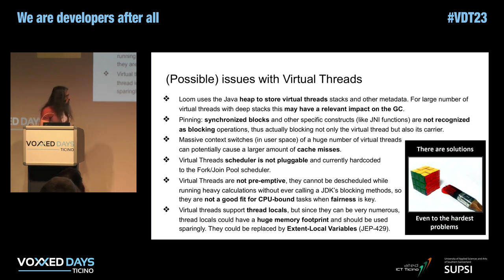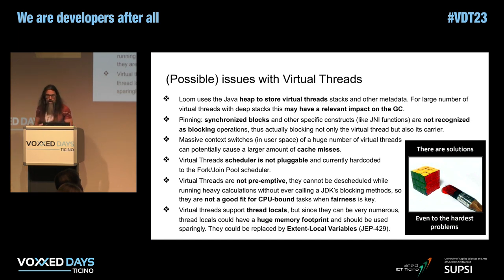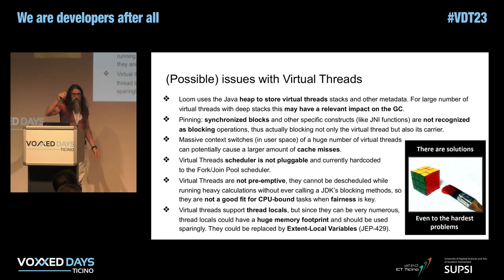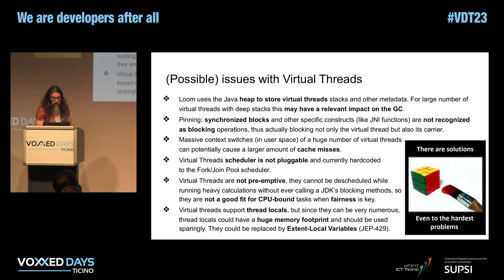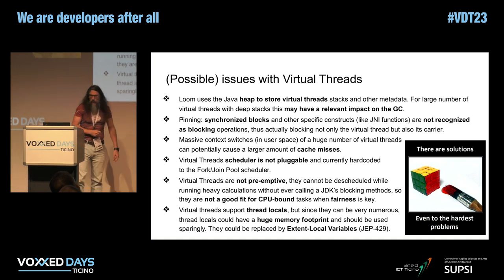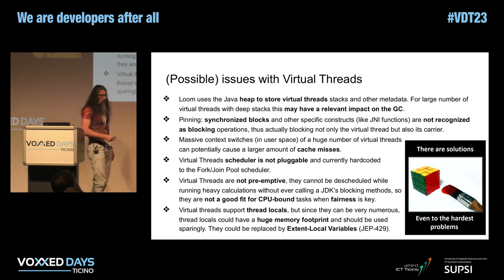The last issue is with thread locals. Thread locals do work with virtual threads, but if you have a million virtual threads, you will have a million objects allocated — one for each. This will increase memory occupation a lot, and that's probably not what you want. There is another JEP — the Project Loom JEP is 425, and there is JEP 429, which is a replacement for the thread-local mechanism that is a better fit for virtual threads.